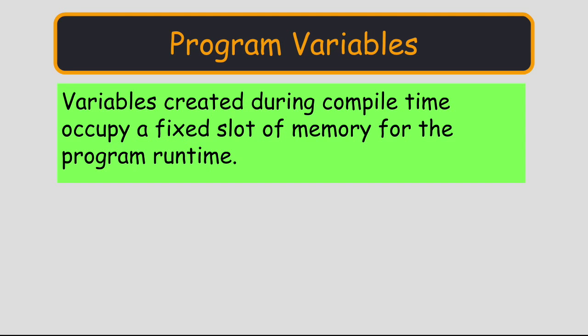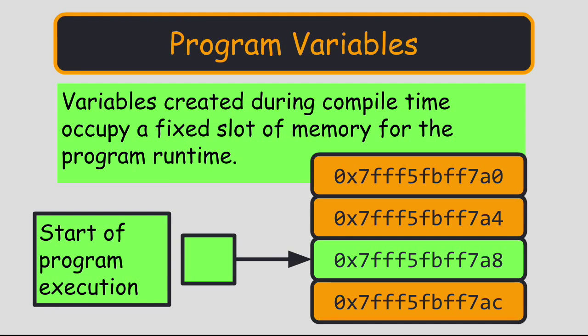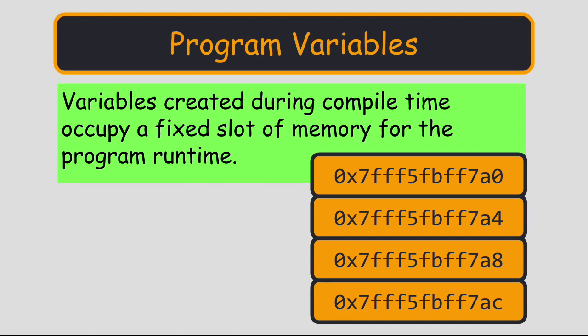Variables that are created during compile time will occupy a fixed amount of memory for the duration of the program. These are safe variables, since they won't take up any more memory than they are assigned. Also, they are assigned free space during compile time. They won't overwrite memory cells that are currently in use.